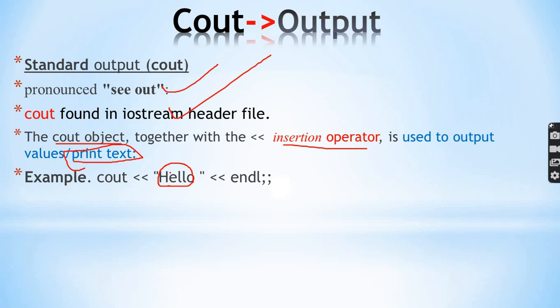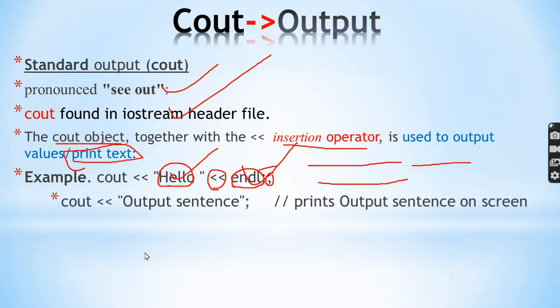The insertion operator - two less than signs - for example: cout with the insertion operator, then within double quotes your text, then display to the screen. The statement ends with a semicolon. When you execute it will print the text. For example, it prints output sentence on screen.